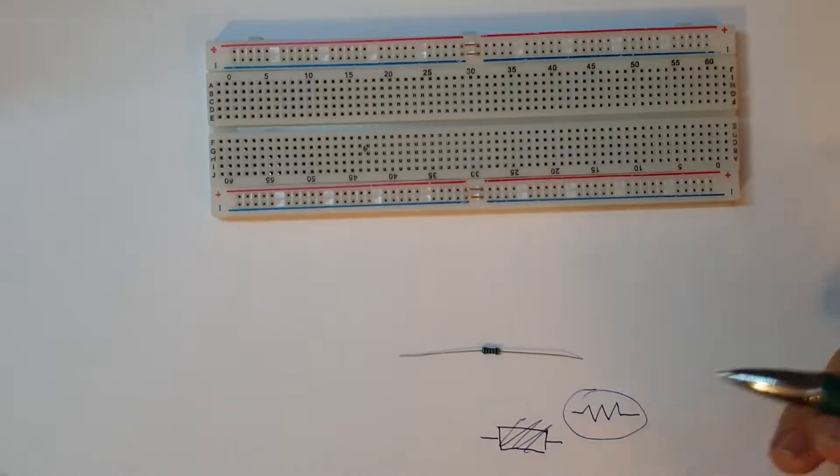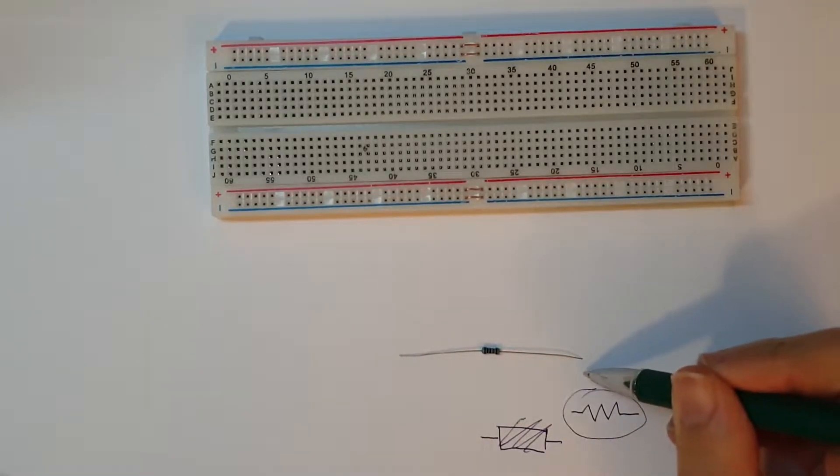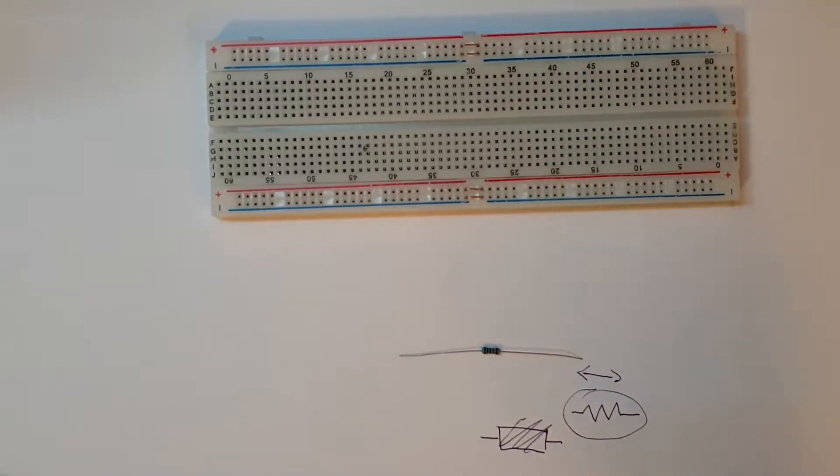Resistor is a bi-directional element, meaning electricity flows left to right and right to left. It doesn't matter. Electricity always flows as long as you connect plus and minus.